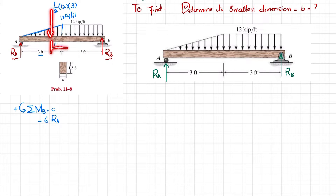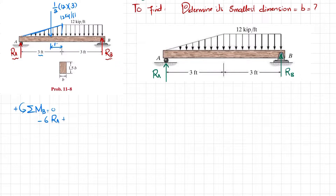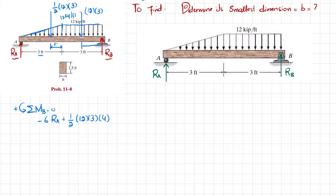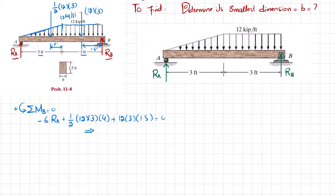The triangular load produces a counterclockwise moment at 4 feet: +1/2·12·3·4. The uniformly distributed load converts to a point load of 12·3 = 36 kips acting at 1.5 feet from B, also counterclockwise: +12·3·1.5. Setting the sum to zero and solving gives RA = 21 kips.